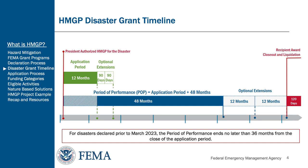The HMGP application period opens when HMGP is authorized under the presidential declaration. The application period is open for 12 months from the date of declaration but can be extended by up to 180 days for a total period of 18 months in the event of extraordinary conditions. Once an application period is closed, it cannot be reopened. The HMGP period of performance begins with the opening of the application period and ends no later than 48 months after the close of the application period.